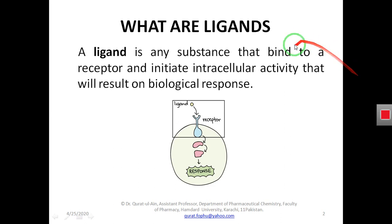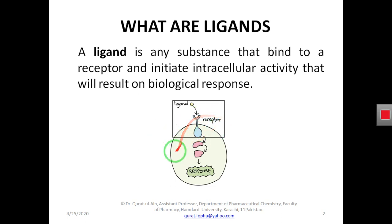To study receptor theory, it is very important to understand both ligand and receptors. Starting our topic: ligands could be any substance — endogenous or exogenous. It could be any chemical, any protein or non-protein molecule, any hormone, or any amino acid that can bind a receptor and act as a signal.